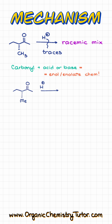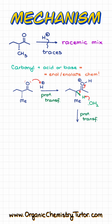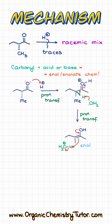If we take our ketone and protonate it, giving us the corresponding protonated intermediate, and then pull off this alpha hydrogen with water or whatever else we have floating around, we are going to end up with an enol species after our proton transfer. The important part about this enol is that the carbon that used to be chiral is no longer chiral — it is an sp2 hybridized species.